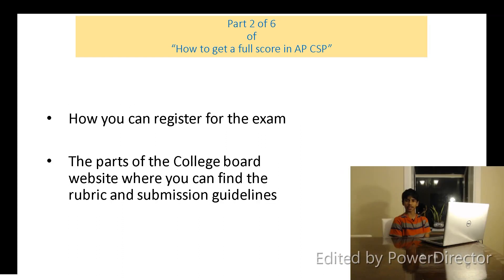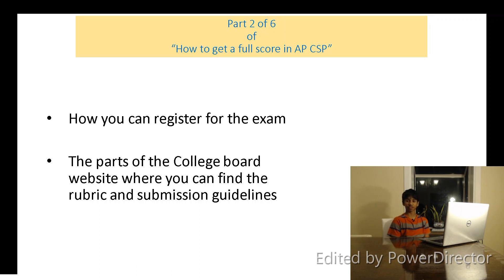Now let's talk about how you can register for the AP CSP exam. If you're in an AP class, your teacher will probably register for the exam for you and give you an AP number. You'll use this AP number to confirm your registration by going online to the College Board website and typing it in. Once you've done that, you'll have two options available to you.